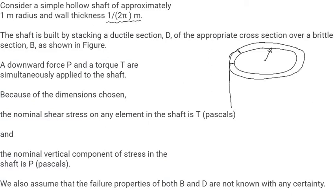Let us complete its shape. Now this shaft is built by stacking a ductile section D of the appropriate cross section over a brittle section B. This ductile section is named as D, brittle section is named as B.